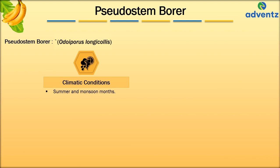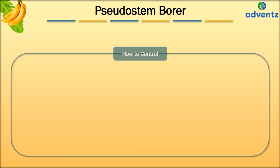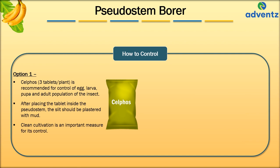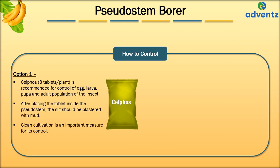How to manage Pseudostem Borer: in case of severe infection, the affected plant should be uprooted and burnt. The first option is use of SELPHOS — three tablets per plant is recommended for control of egg, larva, pupa and adult population. After placing the tablet inside the pseudostem, the slit should be plastered with mud. Clean cultivation is an important measure for its control.